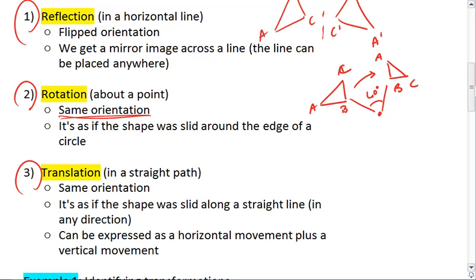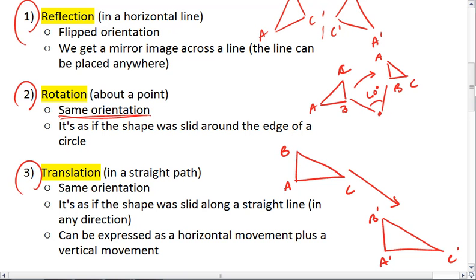In translation, we also end up with the same orientation. But it's as if we moved, we just grabbed our triangle or any shape and slid it. It's as if the shape was slid along a straight line in any direction. And notice this can be expressed as a first horizontal movement, and then a vertical movement.